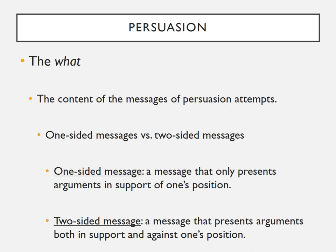The third characteristic of message content is whether the message is one-sided or two-sided. A one-sided message only presents arguments in support of one's position — for example, someone who is anti-death penalty stating only reasons why the death penalty is bad. A two-sided message presents arguments both for and against a position, though still ultimately supporting one side. For example, a two-sided argument against the death penalty would include pro- and anti-death penalty arguments, but overall highlight the arguments against it while also critiquing the pro-death penalty arguments.